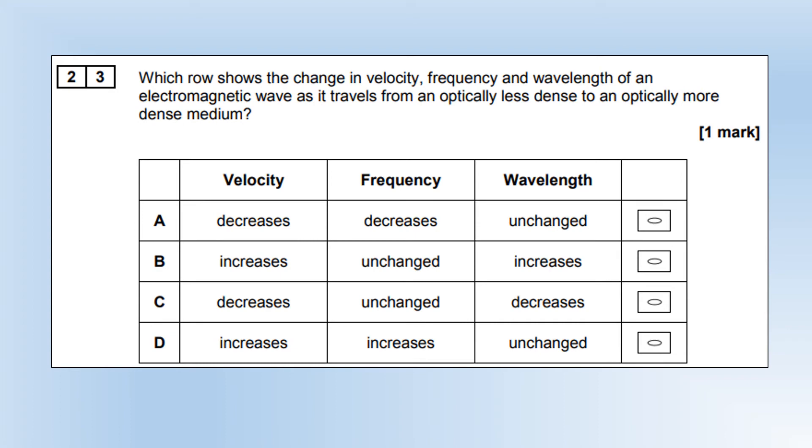Which row shows the change in velocity, frequency and wavelength of an EM wave as it goes from a less dense optical material to an optically more dense. When you increase the density, velocity decreases. But frequency never changes. So that tells us straight away it's option C. And if frequency is unchanged, velocity decreases, wavelength decreases too.